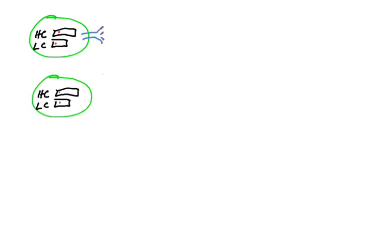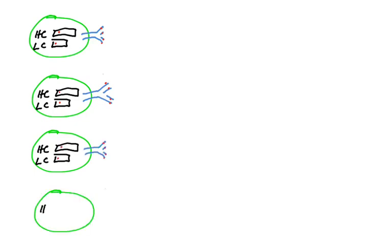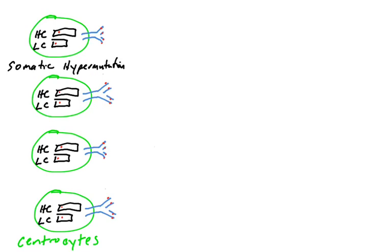Another B cell might mutate different cytosines, different nucleotides, different amino acids, and so it's going to make a heavy and light chain which is different than the one above, different from the original. This goes on and on. So you have these cells that we saw in the last slide, the centricites, they've all undergone somatic hypermutation in the variable region of the light and the heavy chain genes.